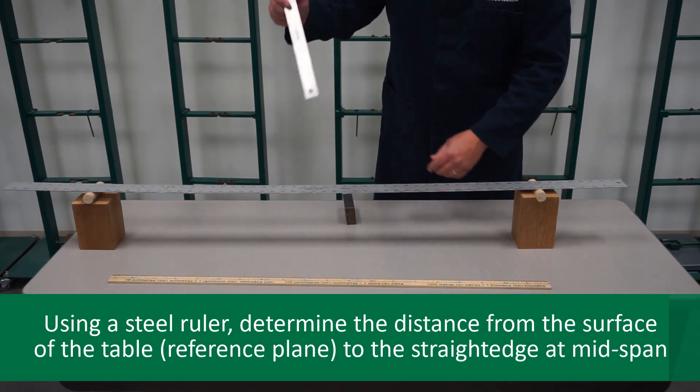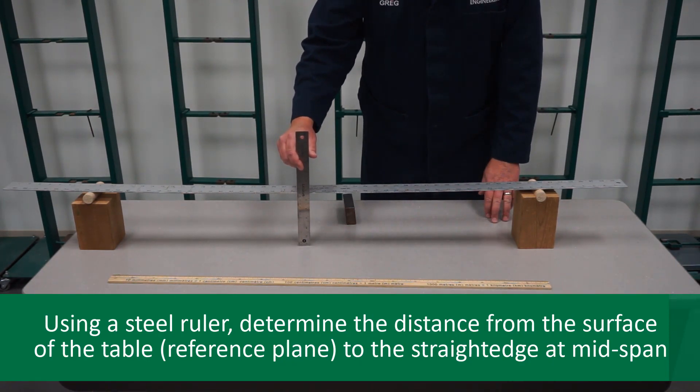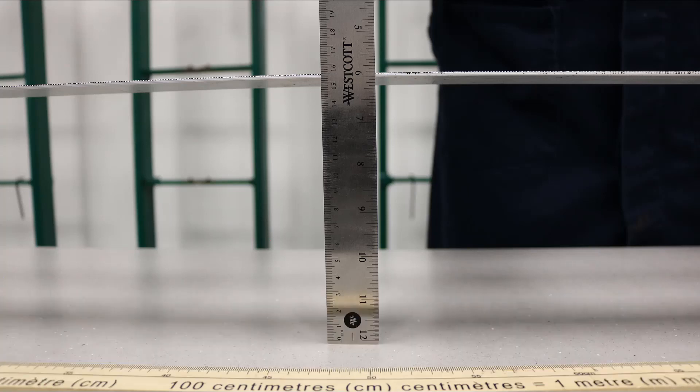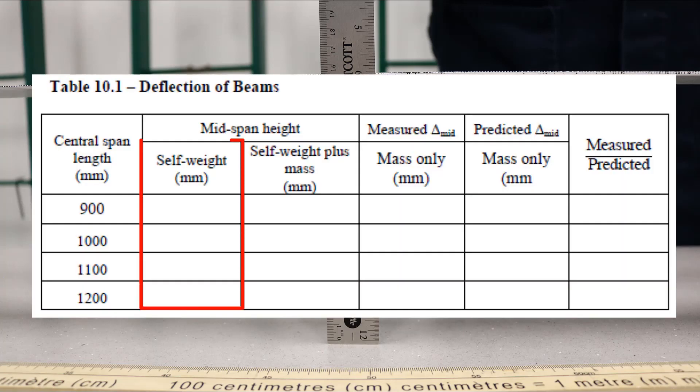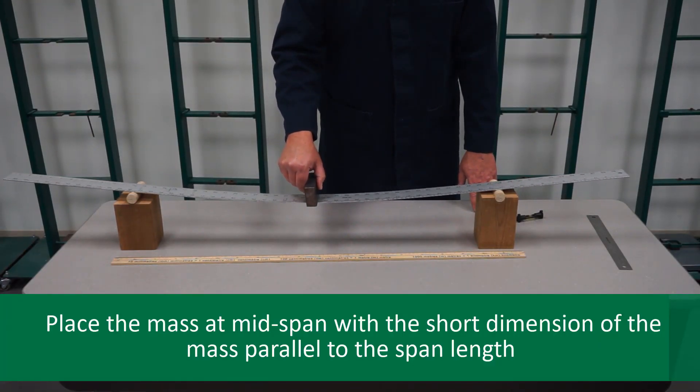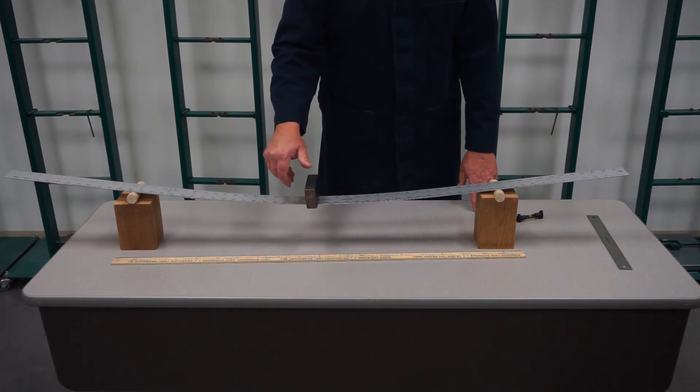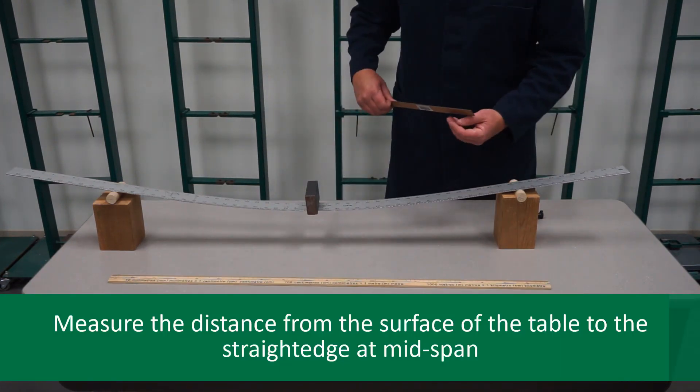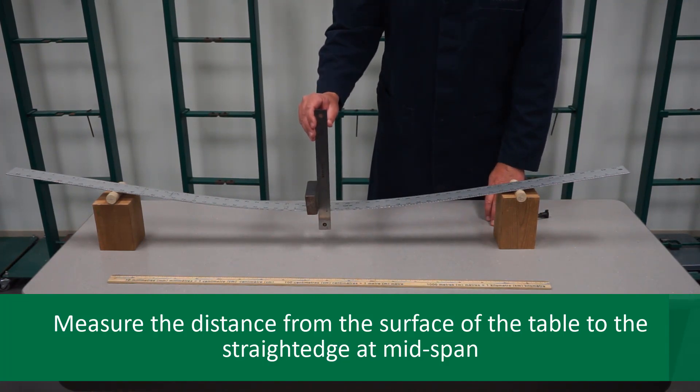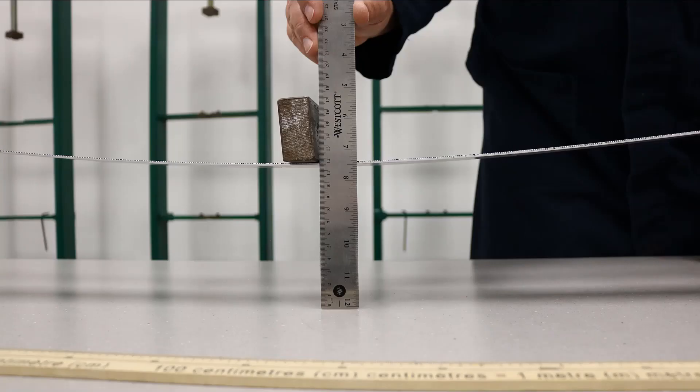Using a steel ruler, determine the distance from the surface of the table to be used as your reference plane in this exercise to the straightedge at mid-span. Note that a line has been scribed at mid-span for your convenience. You will record these values in table 10.1. Now place the mass at mid-span with the short dimension of the mass parallel to the span length. Once again, measure the distance from the surface of the table to the straightedge at mid-span. Record this distance in table 10.1.